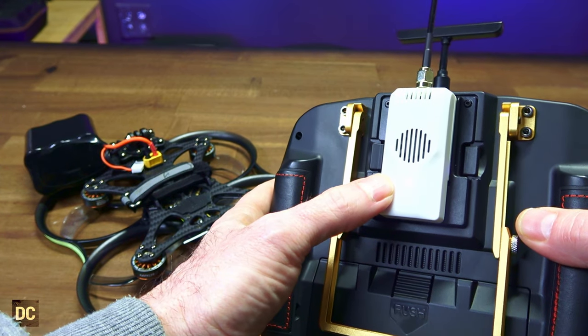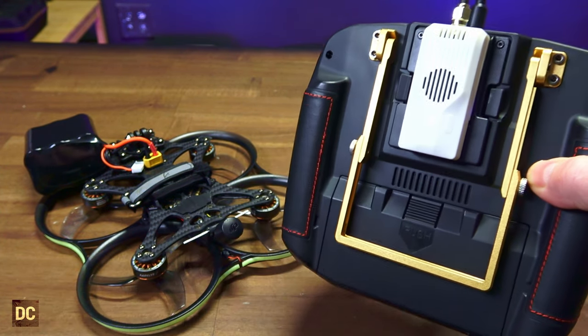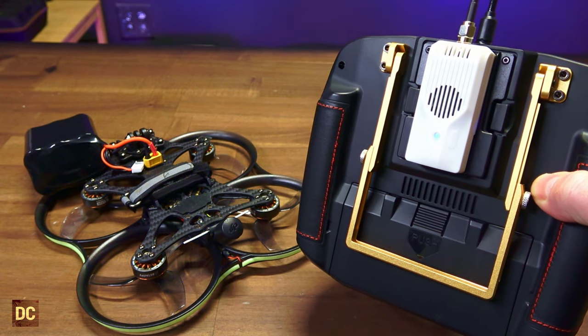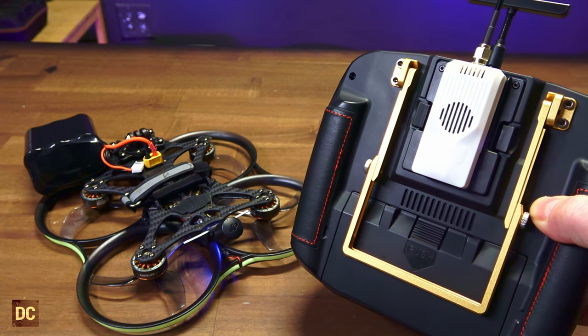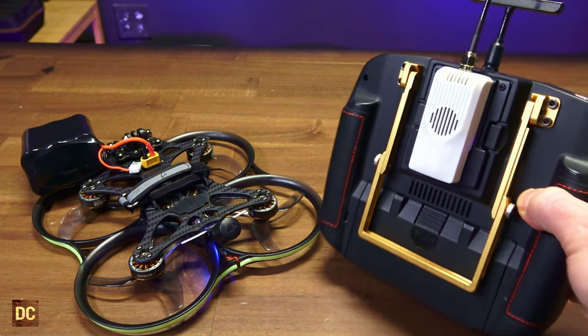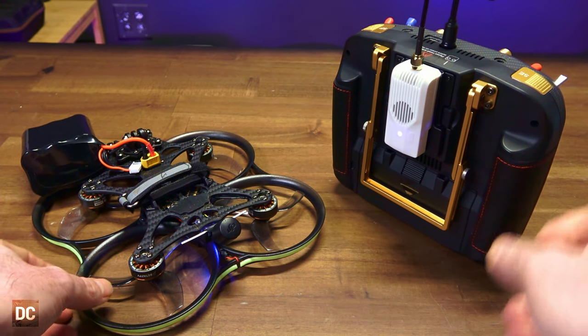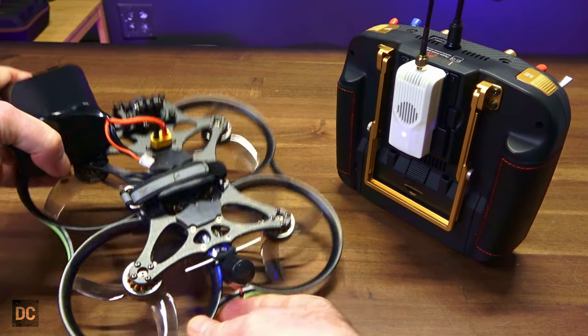And now with the TX, let's go ahead and one, two, three here. You'll see it flash momentarily. Now it's in the binding process. Once it goes solid blue, we should have a link to a 3.0 ELRS receiver. So now it is solid blue and it is bound.